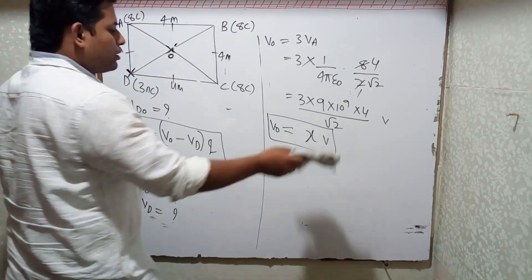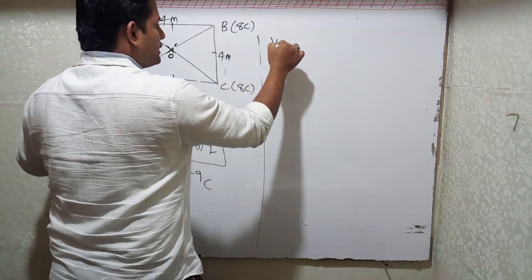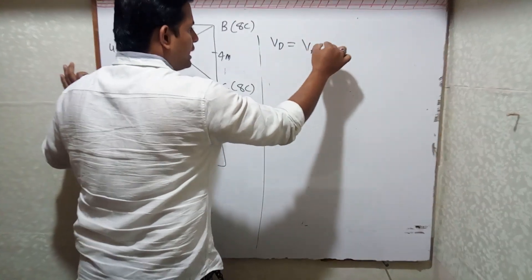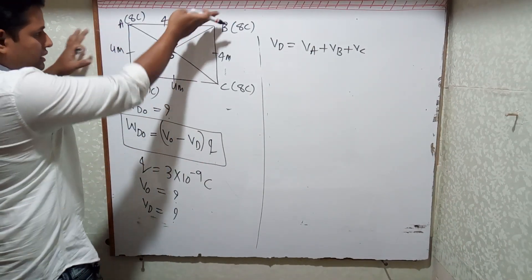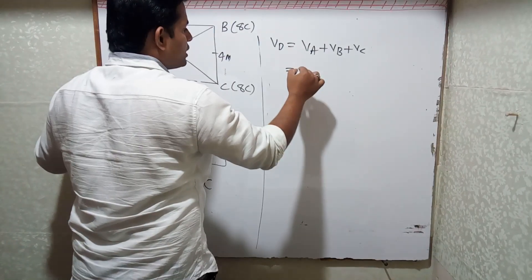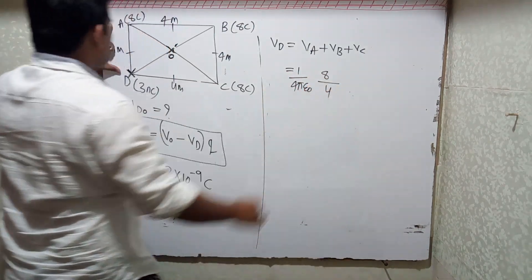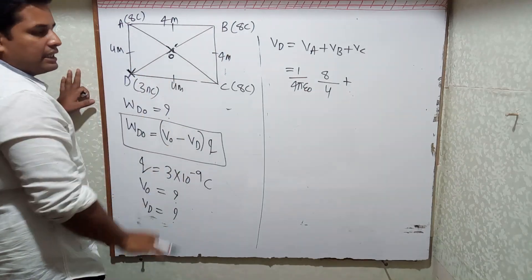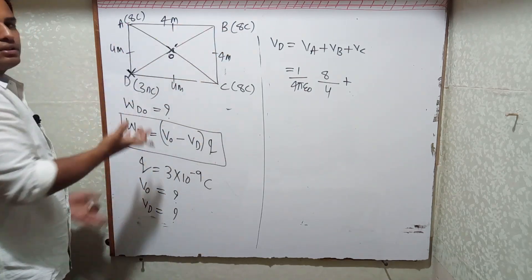Good. I got V_O = x volts. Now I need to calculate V_D — the potential at point D due to charges at A, B, and C. So V_D = V_A + V_B + V_C. I cannot combine them as 3V_A here because the distances are different: AD = CD = 4 meters, but BD is the diagonal. BD = √(4² + 4²) = √32 = 4√2 meters. So the distances vary.